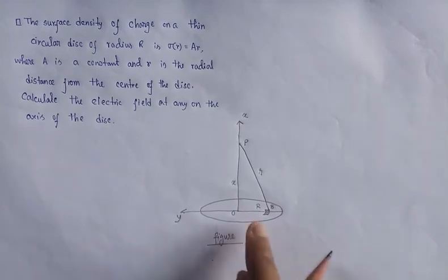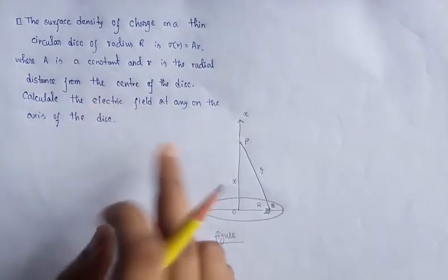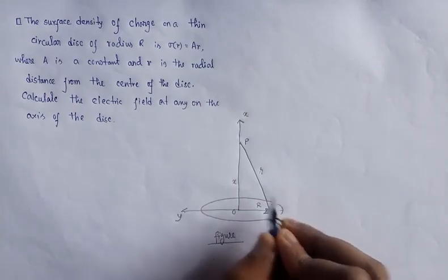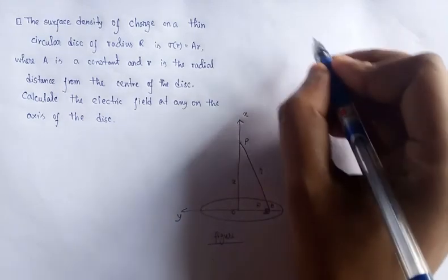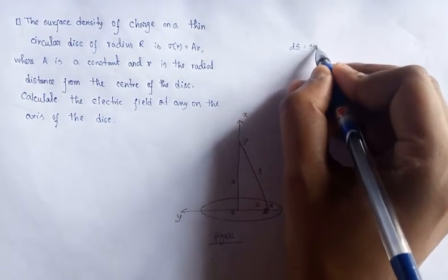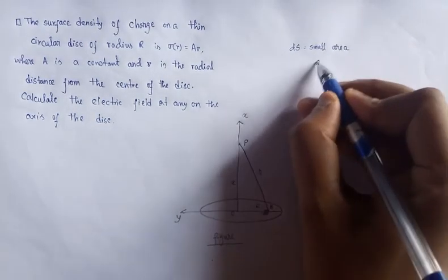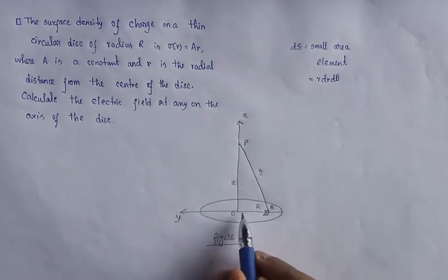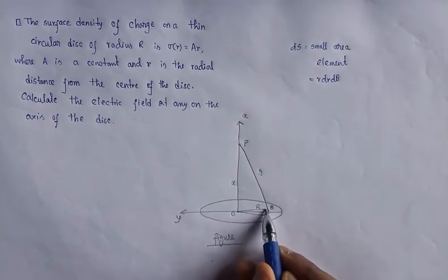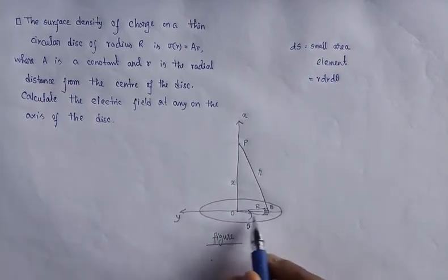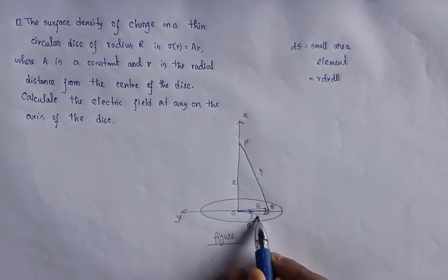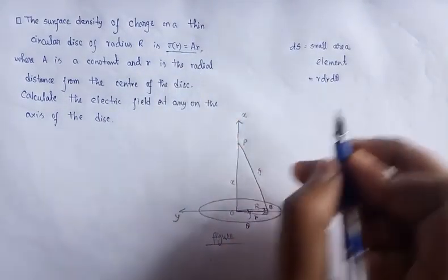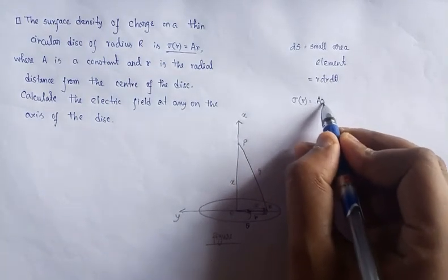For solving this problem we consider the potential at point P. For the charged disk, the surface elements add up over the entire disk. The area of the surface element in circular coordinates is r dr dθ, where θ is the angle subtended by the small element and r is the distance from the center to the surface element. The surface charge density is given as σ(r) = A·r.